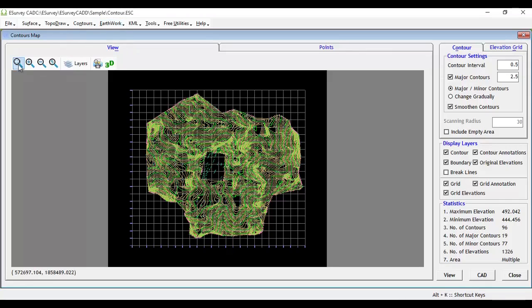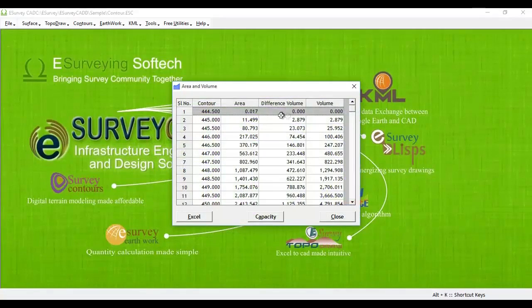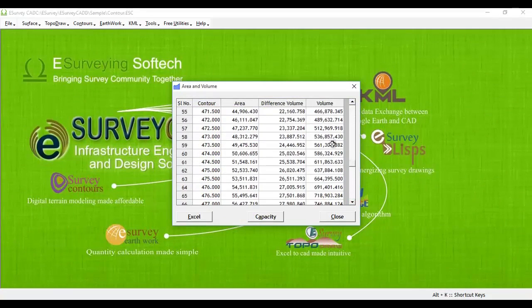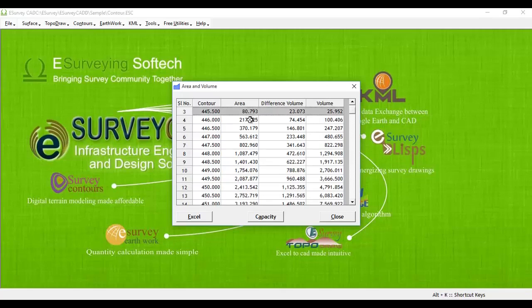Once you generate contours in eSurveyCAD, if you select the area and volume calculation tab, you will get the volume up to contour values starting from the first value to the last contour in the contour map. The software will compute the area of each contour, and then from the second contour it will average the areas and multiply by the contour interval.